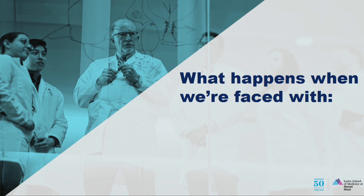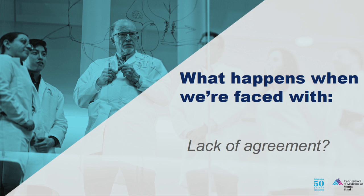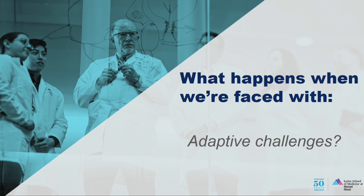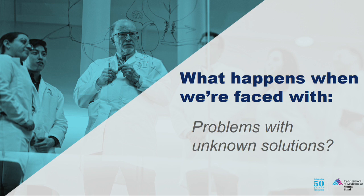Before jumping into what RBI — Racism and Bias Initiative — is, I'll just use the acronym RBI. What happens when we're faced with wicked questions we don't know the answers to? What about lack of agreement on how to approach something, paradoxical issues, or adaptive challenges — where you think you know the answer, implement something, and then human behavior adapts in completely unexpected ways? What about problems with unknown solutions that seem too big to address because it's the system?